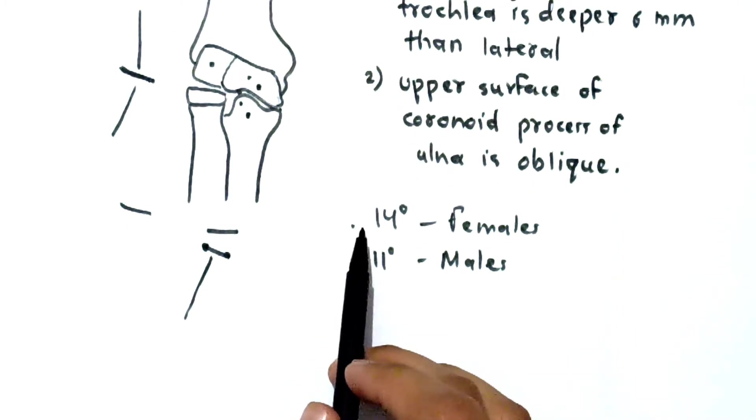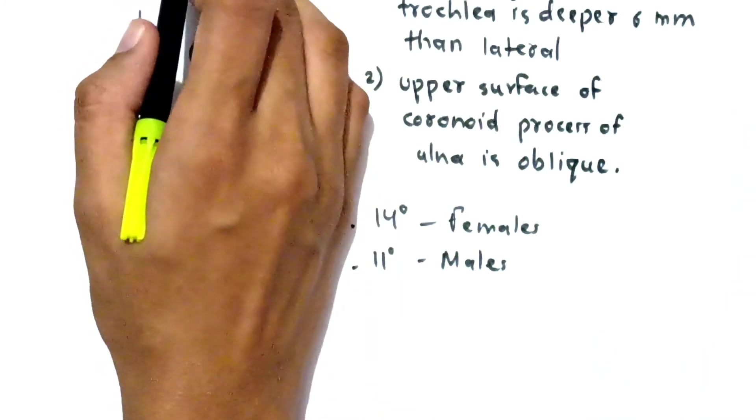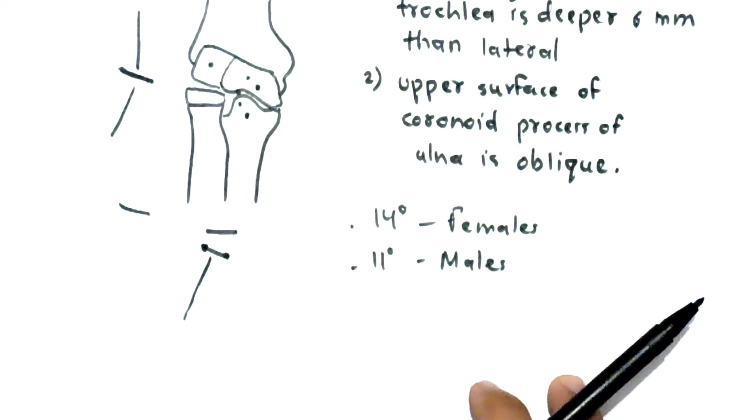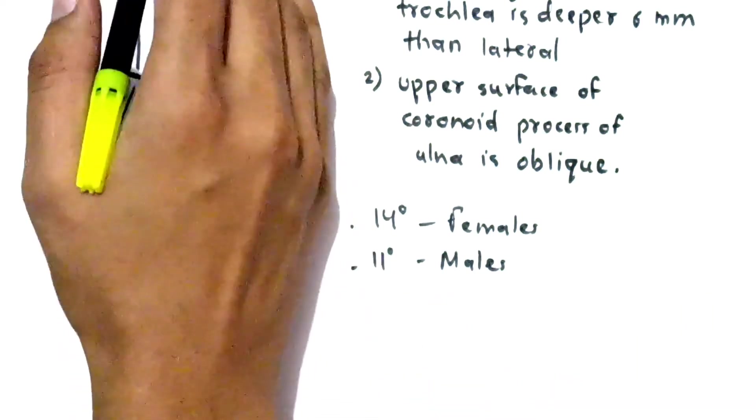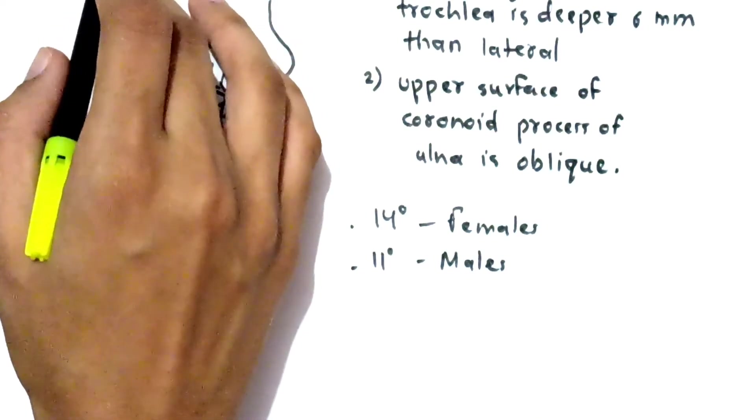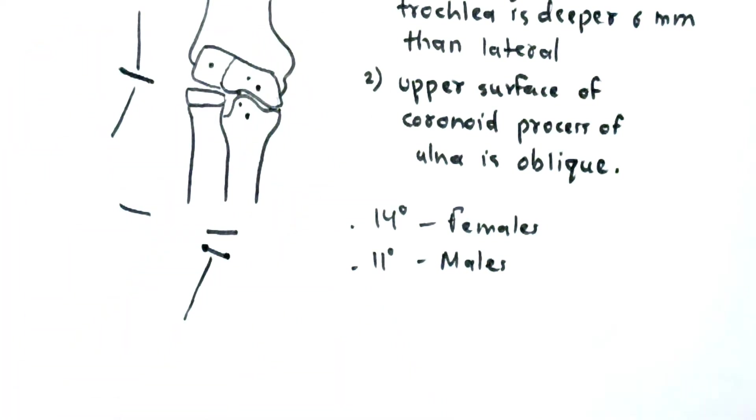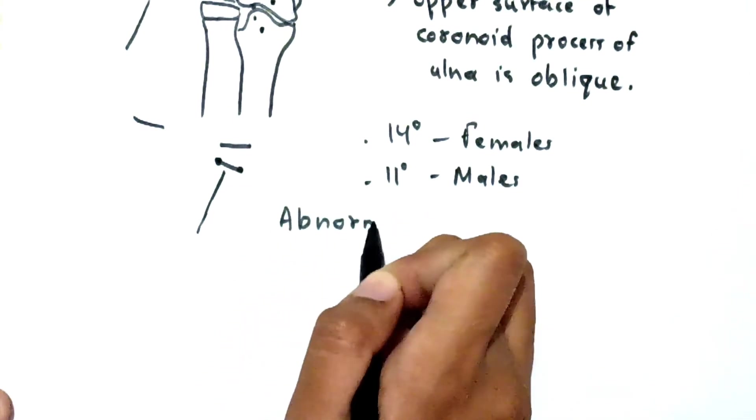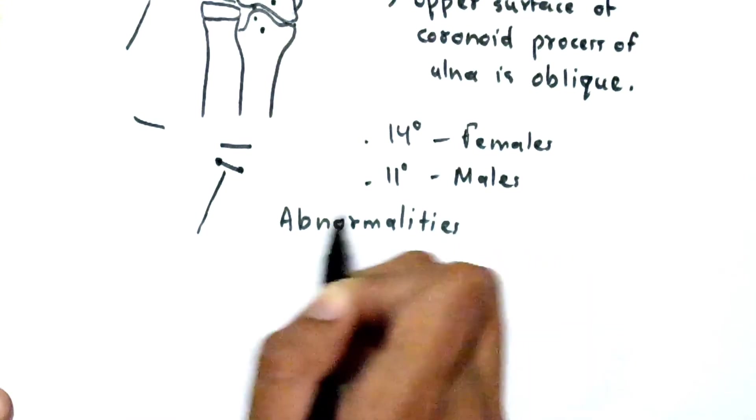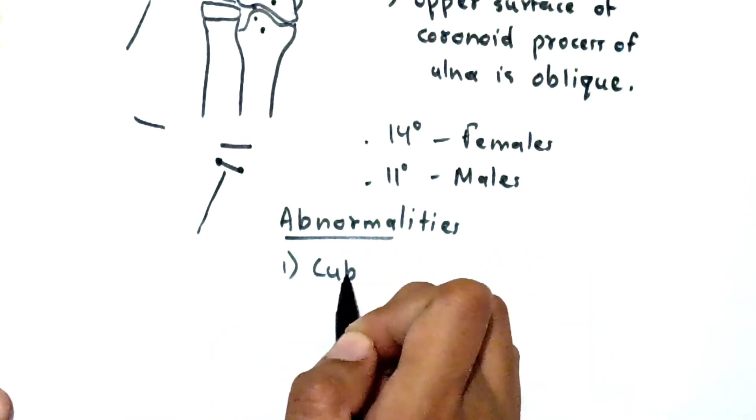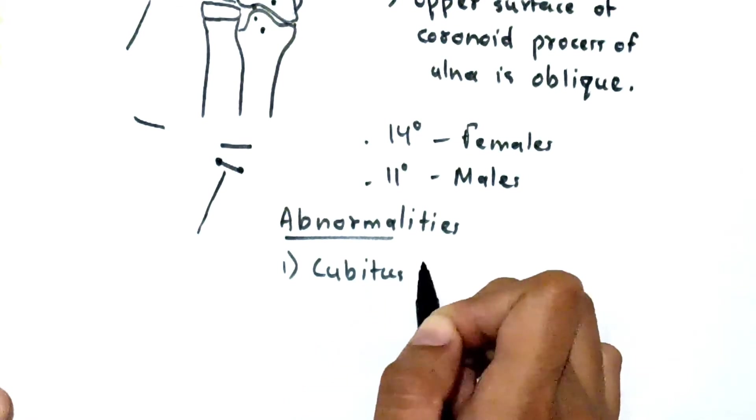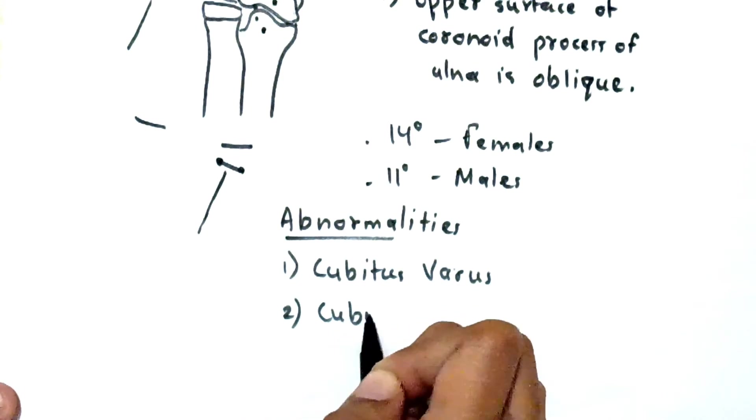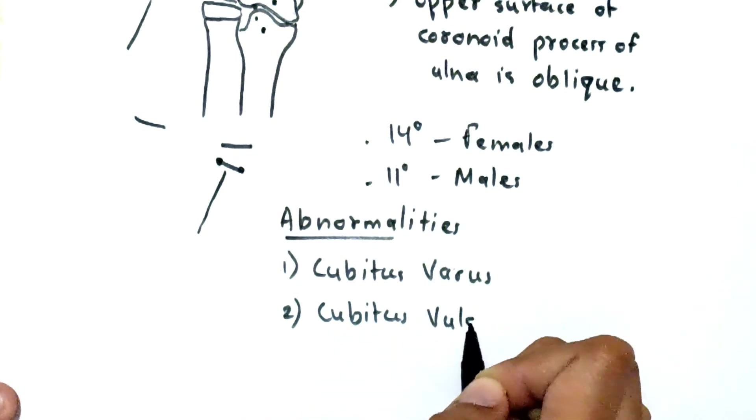Now there are some abnormalities regarding these angles. So if this angle is less or your arm is more towards this side, it is known as cubitus varus. And if the angle is more and your arm is more towards the outer side, it is known as cubitus valgus. So there are two abnormalities: one is cubitus varus, second is cubitus valgus.